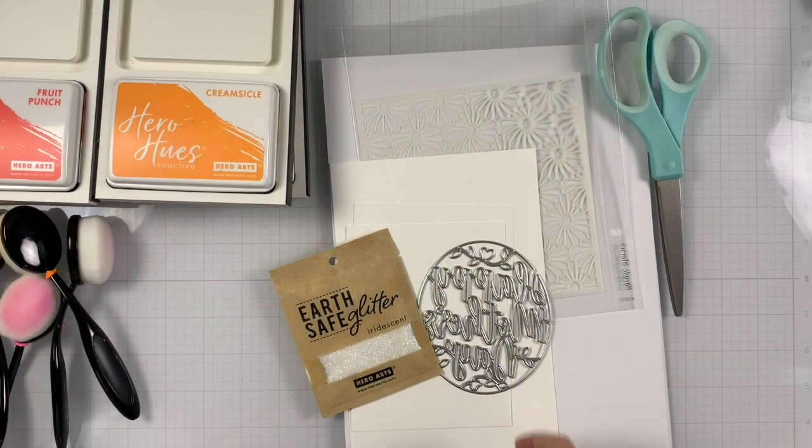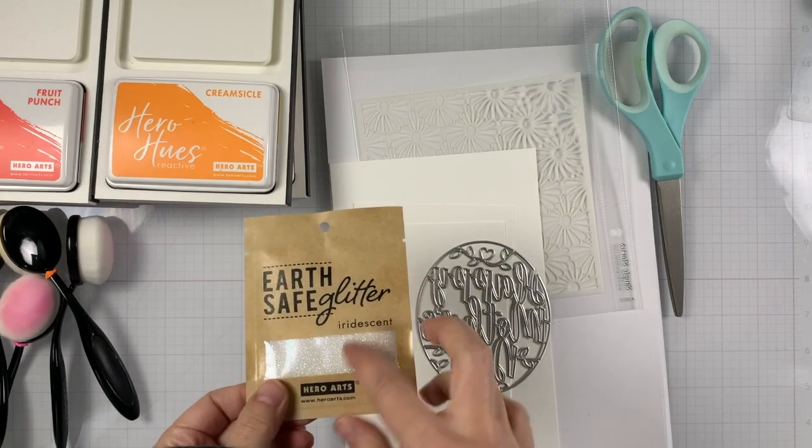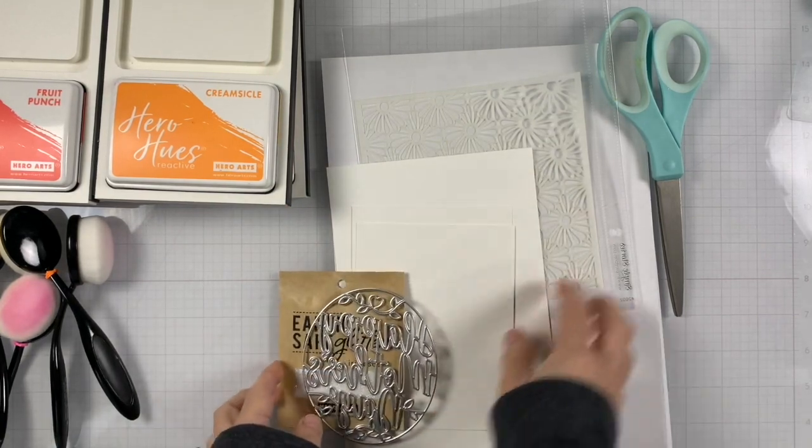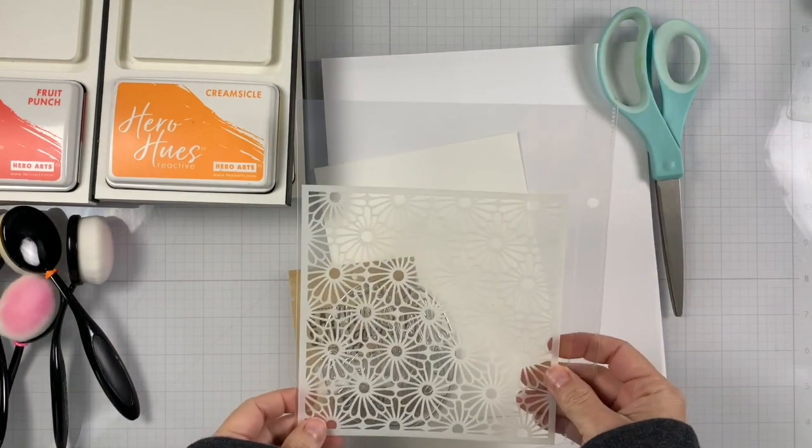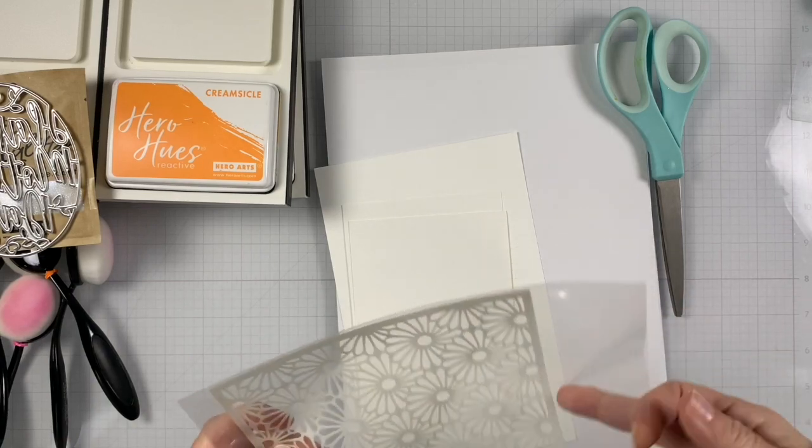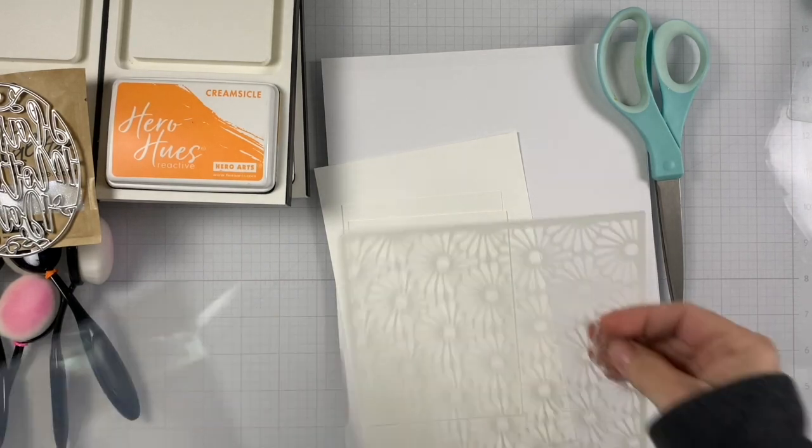For today's card, we're going to use the Earthsafe glitter, the Mother's Day window die, and the Daisy Mosaic stencil. We're going to use the Daisy Mosaic stencil for our background, and we are going to do some dry embossing using the stencil.